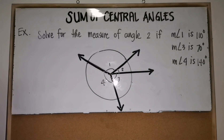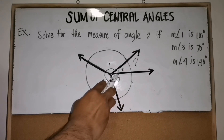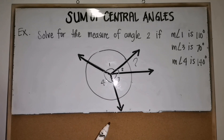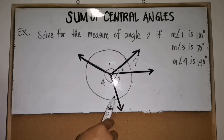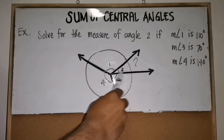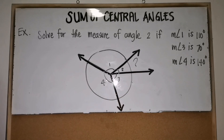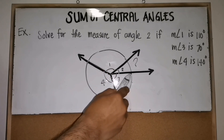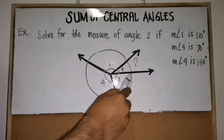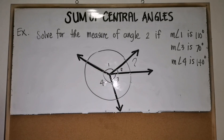Let's have this example: solve for the measure of angle two if the measure of angle one is 110 degrees, measure of angle three is 70 degrees, and measure of angle four is 140 degrees. We're looking for the measure of angle two. Knowing that the sum of central angles is 360 degrees, we can solve for the measure of angle two by first finding the sum of angles one, three, and four, then subtracting from 360 degrees.